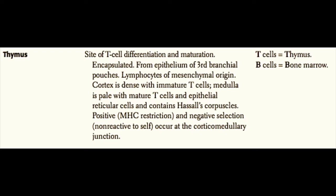Like the lymph nodes, the thymus has a cortex and a medulla. The cortex is dense with immature T cells. The medulla is pale, with mature T cells and epithelial reticular cells, and contains Hassall's corpuscles. Remember that the thymus is the site of positive and negative selection, both of which occur at the corticomedullary junction as T cells mature and pass through the thymus.